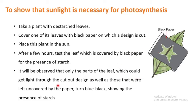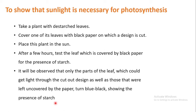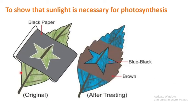It will be observed that only the parts of the leaf which received light — through the cutout design and the uncovered areas — turned blue-black. The parts covered by the black paper, which could not receive sunlight, did not turn blue-black. After the iodine test, only the exposed part turned blue-black while the covered part remained brown.